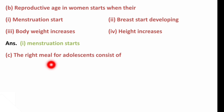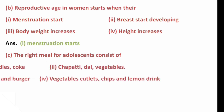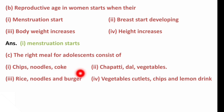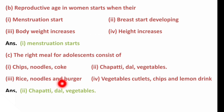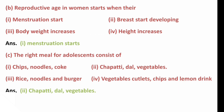Next question: The right meal for adolescents consists of — options: chips, noodles, coke; chapati, dal, vegetables; rice, noodles, burger; or vegetable cutlets, chips and lemon drink. The correct answer is chapati, dal and vegetables, because this is a balanced diet. Chips, noodles, burgers, and lemon drinks do not provide sufficient nutrients.